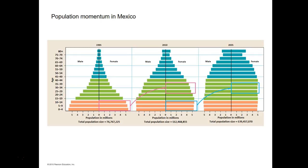Here is a description of population momentum in Mexico. In 1985 — the first panel — you see a very wide bottom to the age structure, called an age pyramid. The first three rows are females aged 0 to 4, 5 to 9, and 10 to 14. If we return to that area of Mexico in 2010, those individuals who were age 0 through 14 are now in the reproductive age category of 25 to 39, and the next set of children born in 2035 will reach that same age category.